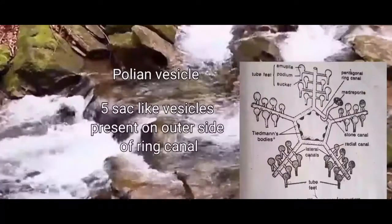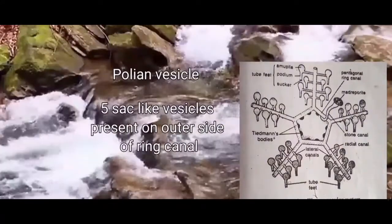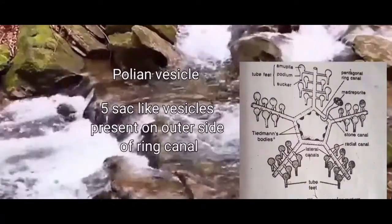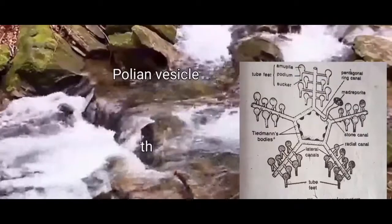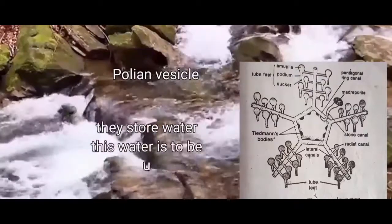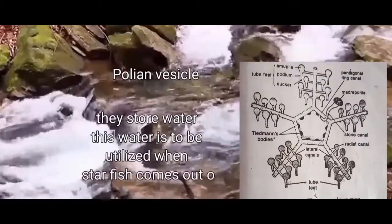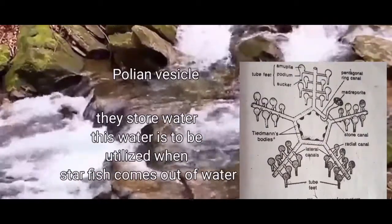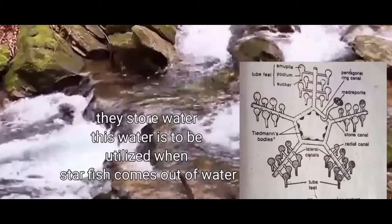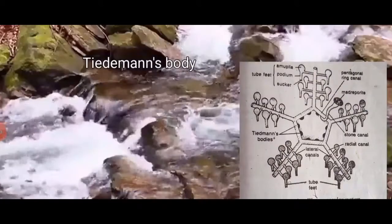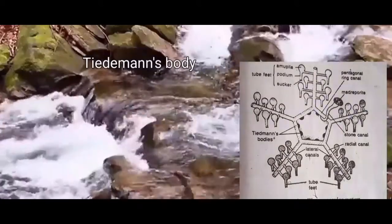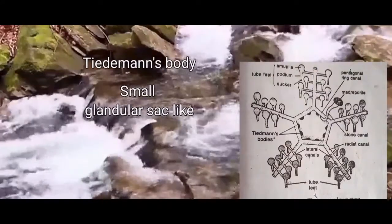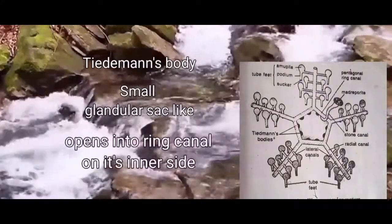Let us talk about the polian vesicles. There are five sac-like vesicles present on the outer side of the ring canal called polian vesicles. They store water which is to be utilized when the starfish comes outside of water.